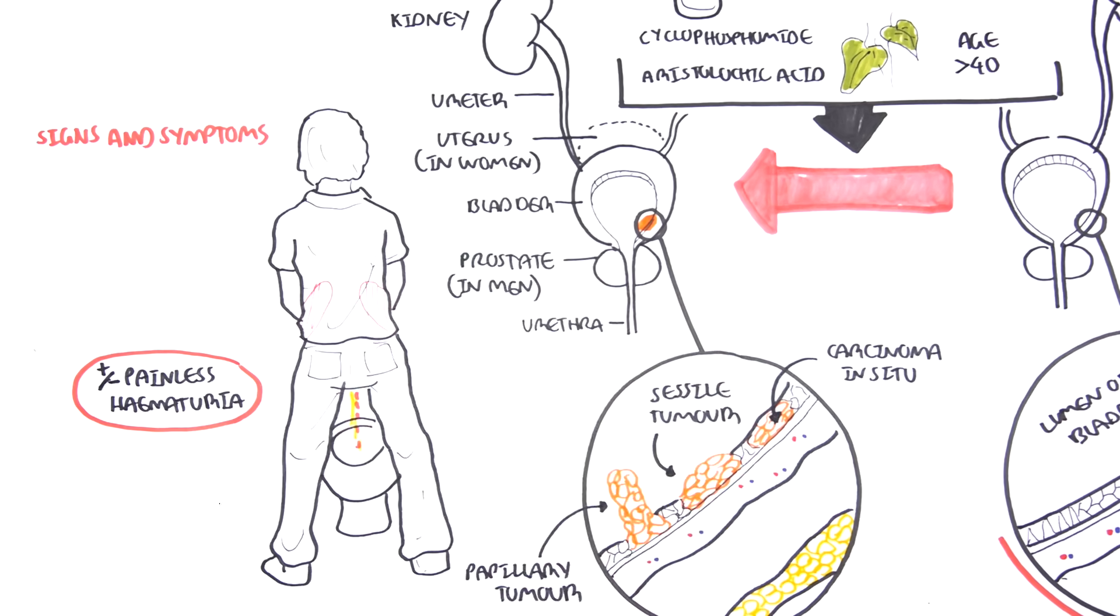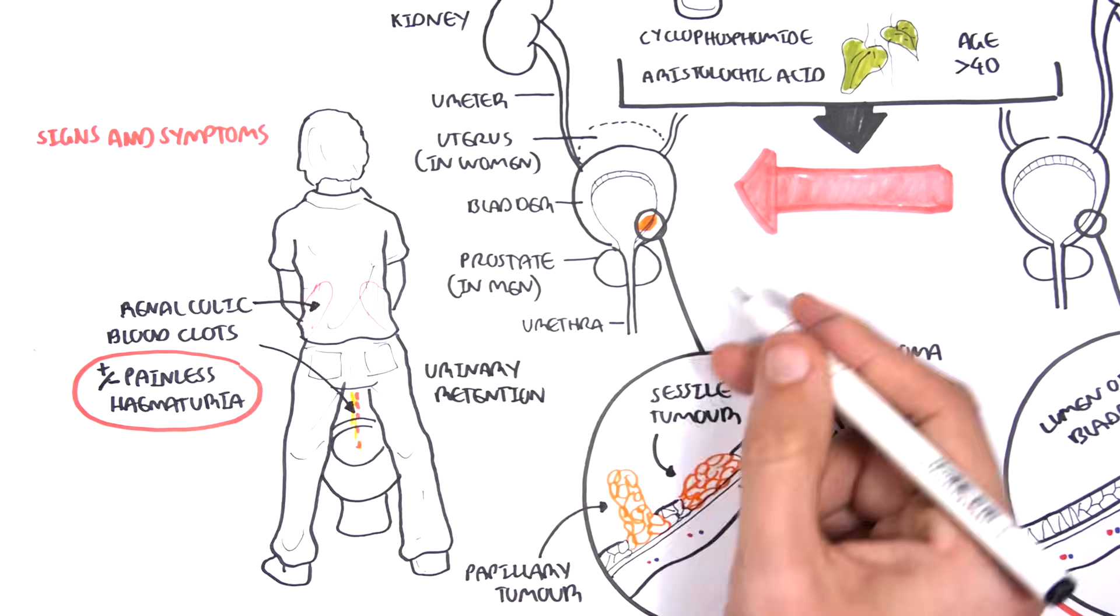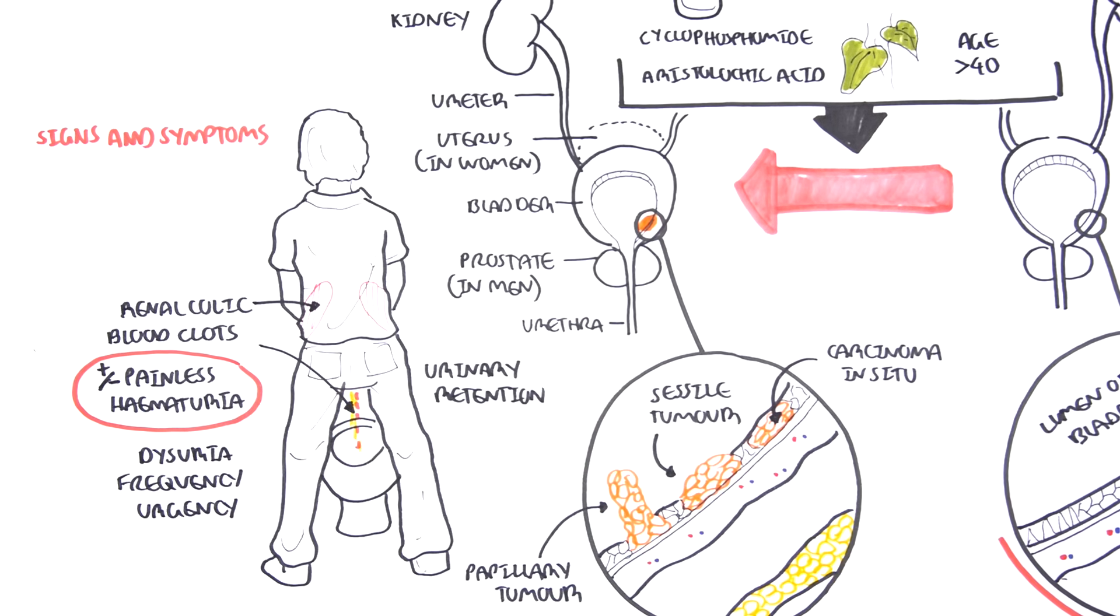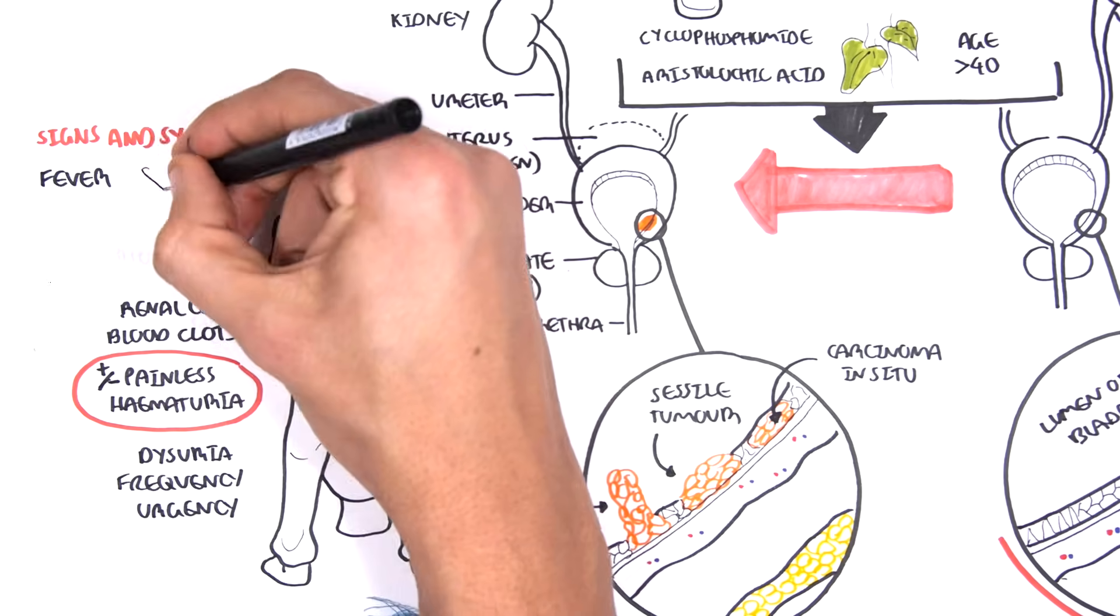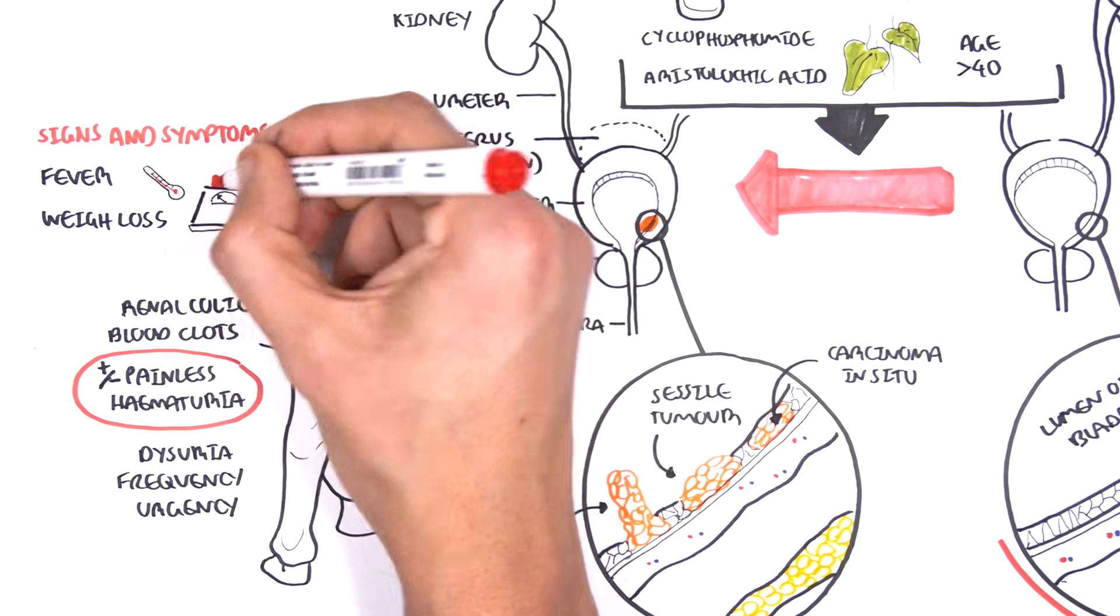Other signs and symptoms can include renal colic. There can be blood clots in the urine, dysuria, frequency, urgency, and urinary retention. There can be systemic signs of malignancy, including fever, weight loss, and night sweats.